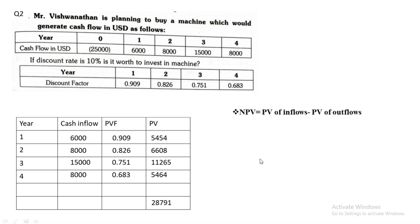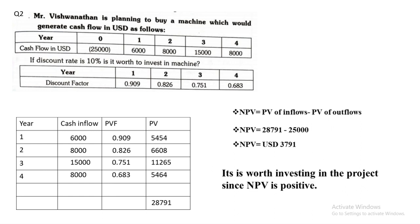Totalling the present values gives 28,791. Applying the NPV formula — PV of inflow minus PV of outflow — gives 28,791 minus 25,000, which equals a positive USD 3,791. Since the NPV is positive, we can conclude it is worth investing in the project. This sum is similar to the first one but involves only one project, making it straightforward.